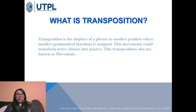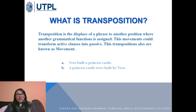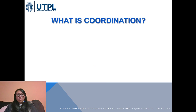What is transposition? Transposition is the movement of a phrase to another position where a different grammatical function is assigned. These movements could transform active clauses into passive voice, and are also known as movements. For example: 'Vera built a princess castle' — we move the verb 'built' and transform it into the passive: 'A princess castle was built by Vera.'